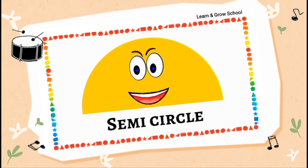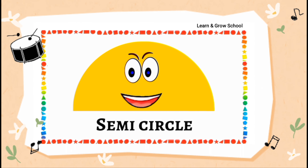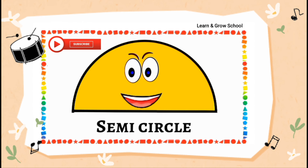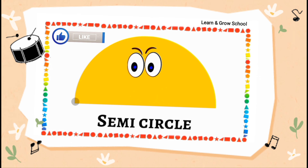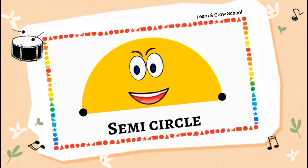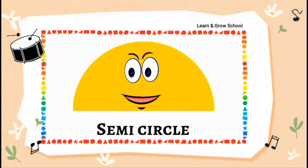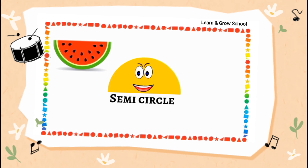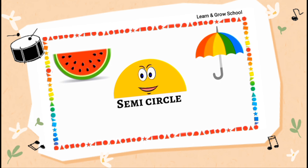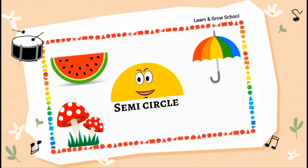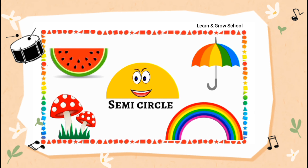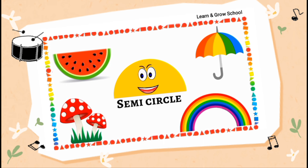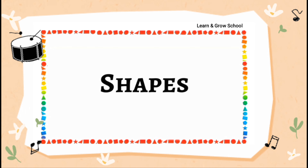Hi, I am a semicircle. I am half of a circle. I am made up of one curved line and one side, and I have two corners. You can find me in many things around you. For example, you can eat me as a watermelon slice. You can use me as an umbrella. You can see me as a mushroom. You can view me as a rainbow. All these things can be seen in the shape of a semicircle.